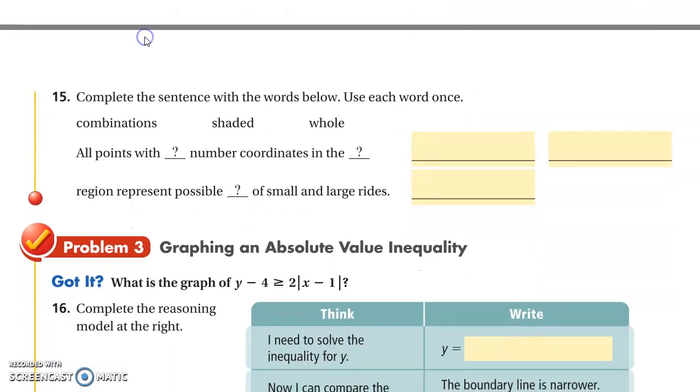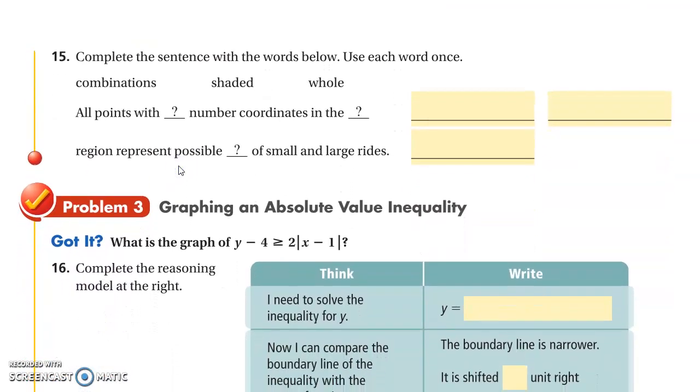Complete a sentence with the words below. All points with whole number coordinates in the shaded region represent the possible combinations of small and large rides.